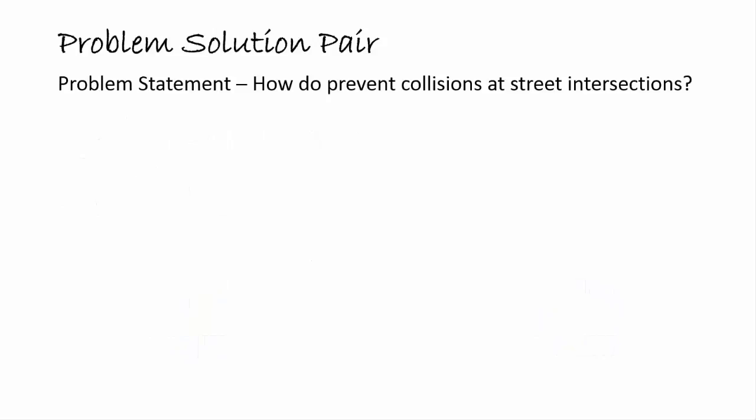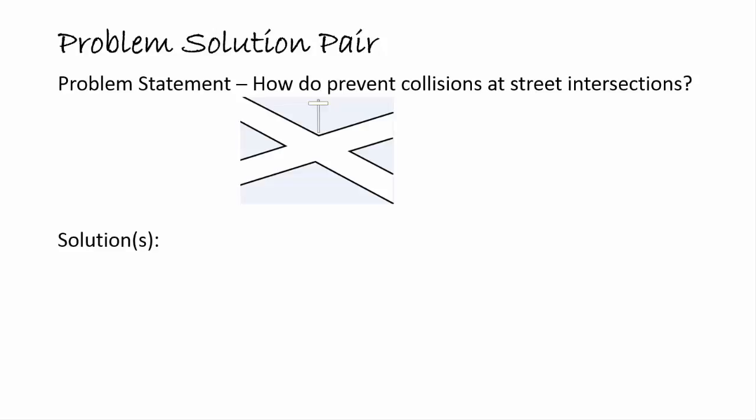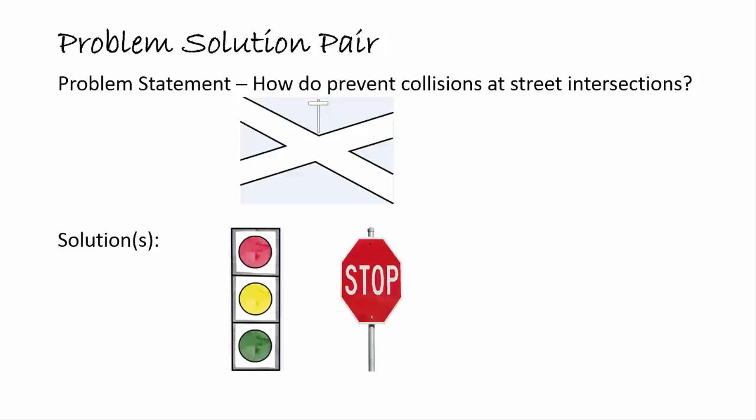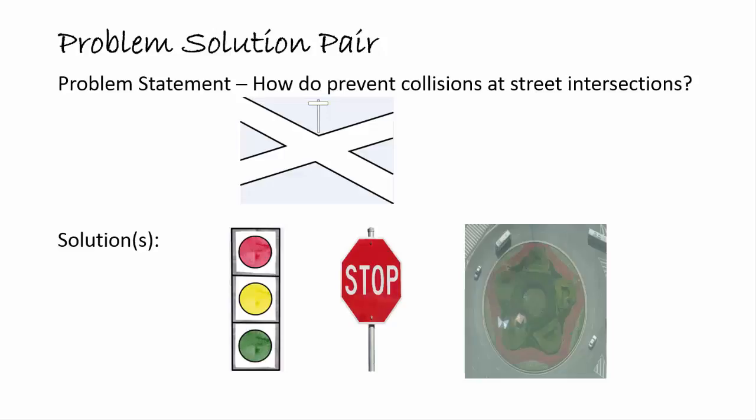Here is a simple example from day-to-day life about a problem-solution pair. How do we prevent collisions at street intersections? Two common solutions are: put a traffic light, put a stop sign, or provide a traffic circle. All are perfectly acceptable solutions. There may be one or more solutions more applicable in a certain scenario, but each is a repeatable solution to a commonly occurring problem — what we can call an implementation pattern.